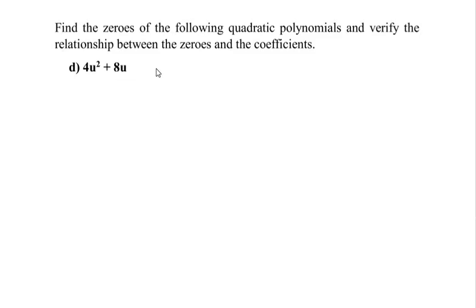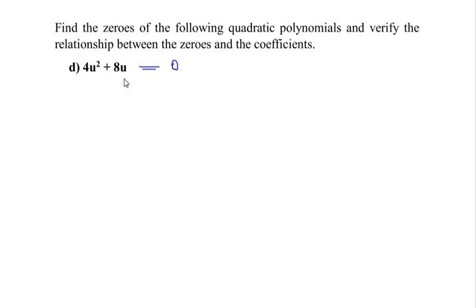This video is a continuation of the previous one where we found the zeros of the polynomials and verified the relationship between zeros and coefficients of a, b, and c. To watch that video you can click on the link above. Continuing here, we have to find out the values of the zeros or roots of this polynomial, which means we are going to equate the given equation equal to zero and factorize it to get the values of u.